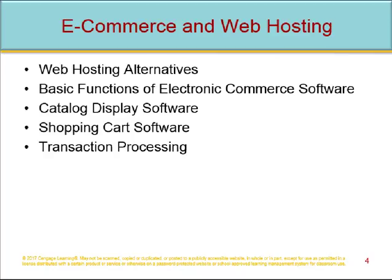Catalog display software organizes goods and services being sold. Online, you can organize by logical departments. Web stores have the advantage that a single product may appear in multiple categories. A static catalog is a simple list written in HTML — you have to edit the HTML to add or delete items. A dynamic catalog stores information in a database with photos and detailed descriptions, and includes a search tool for locating items and determining availability. These are located in the third tier of the website architecture.